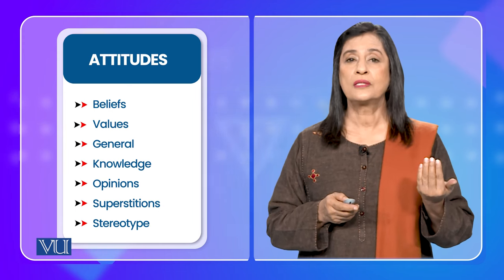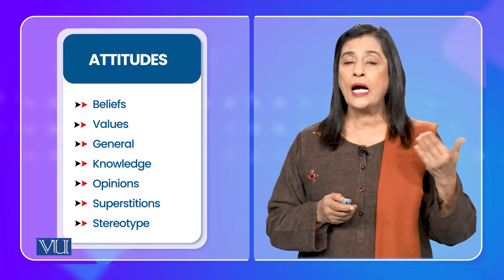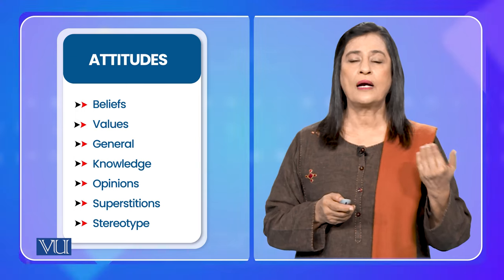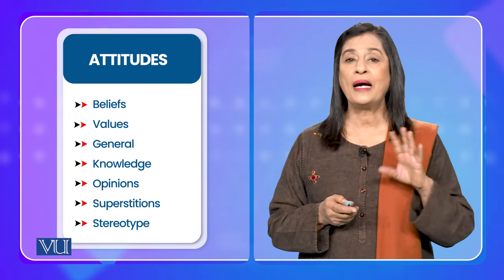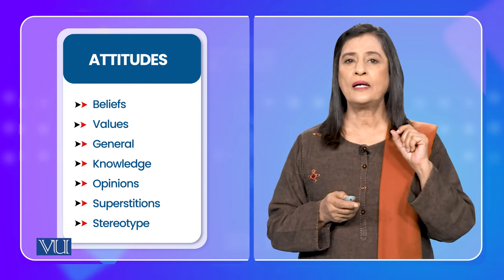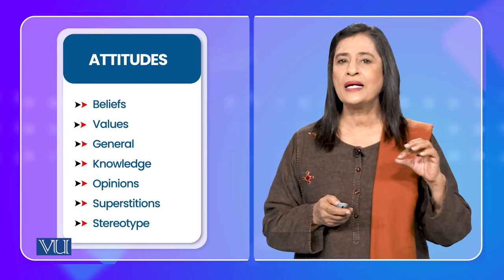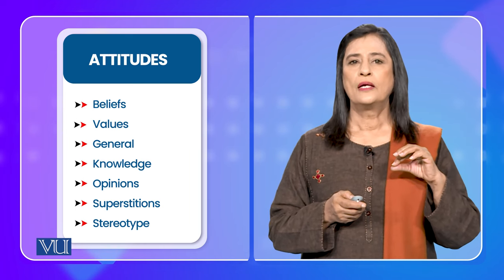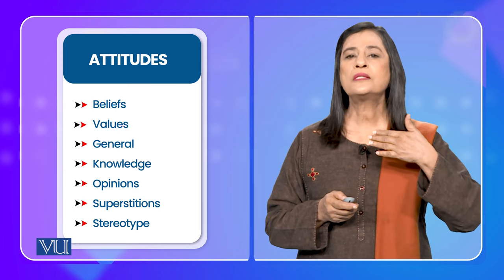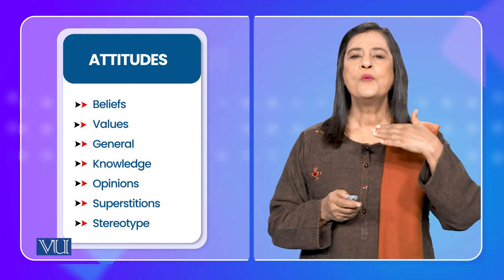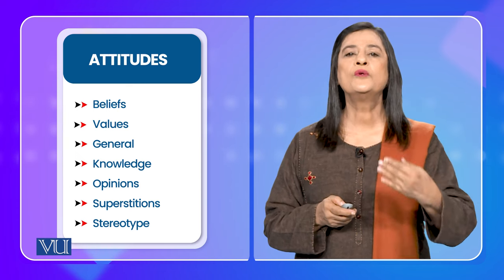Superstitions are also part of attitudes — for example, the belief that if a black cat crosses your path it is a bad omen. The black cat superstition is common across many cultures, but the number thirteen is not as prevalent in Islamic culture. Because of superstitions, we sometimes do or avoid certain things.